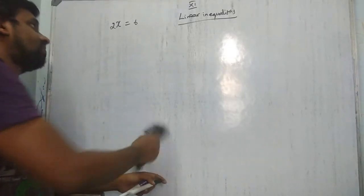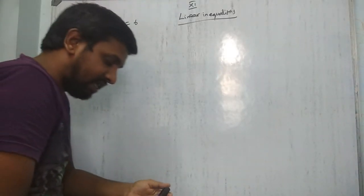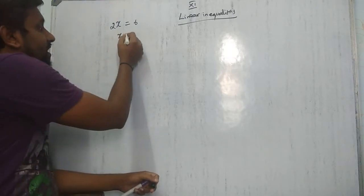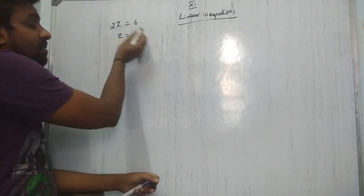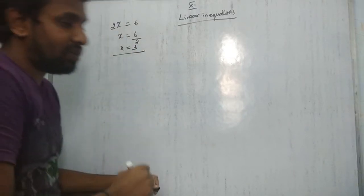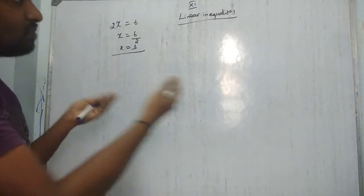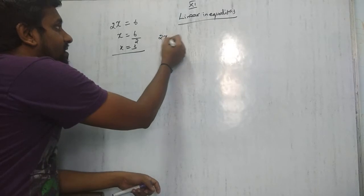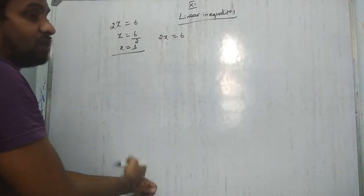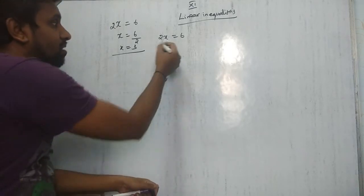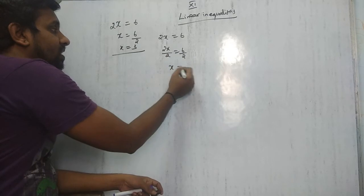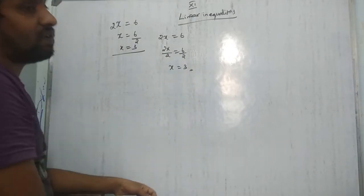Let's take 2x = 6. In past classes you may have done x = 6/2 = 3, but the actual method is to balance both sides. You must divide both sides by 2: 2x/2 = 6/2, so x = 3. This balancing method is important.